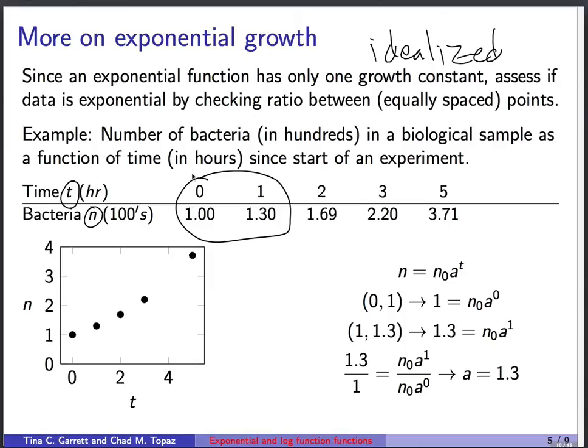What we can do is just hypothesize exponential change. So I'm going to write down n = n₀a^t and plug in two points. For the point (0,1), this tells us 1 = n₀a^0. Plugging in the first point. For the second point, it's at time 1, there's 1.3 hundreds of bacteria, or 130 bacteria. So we plug in, and we get 1.3 = n₀a^1.